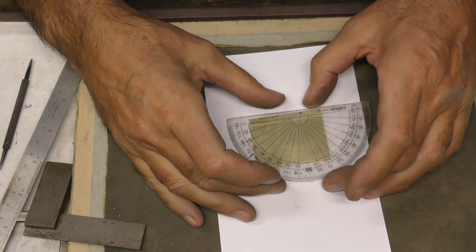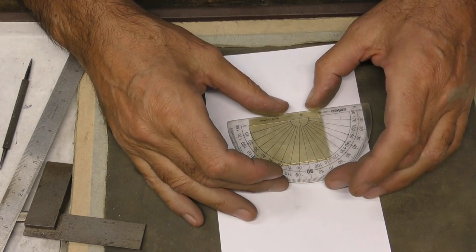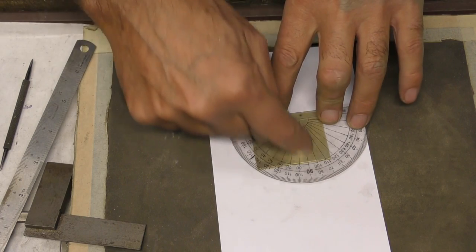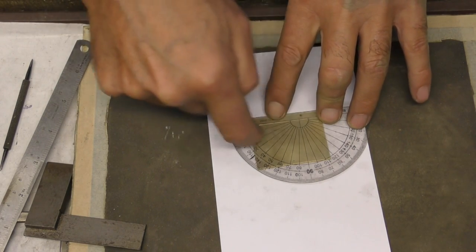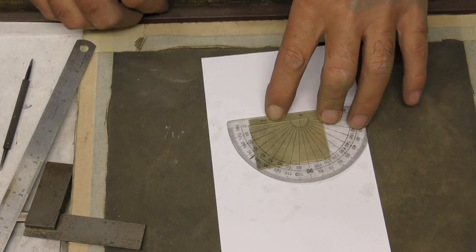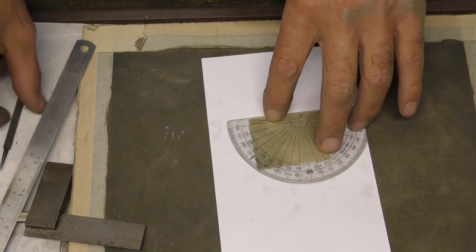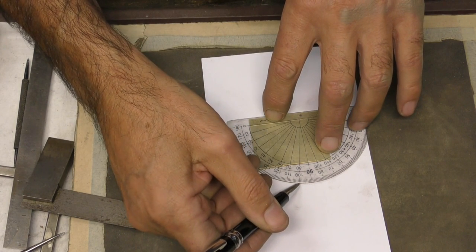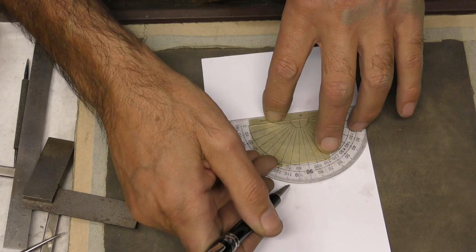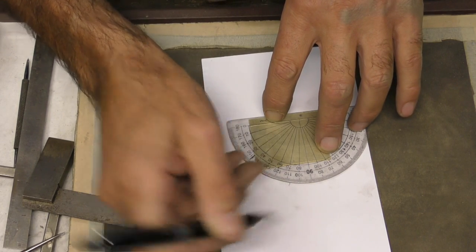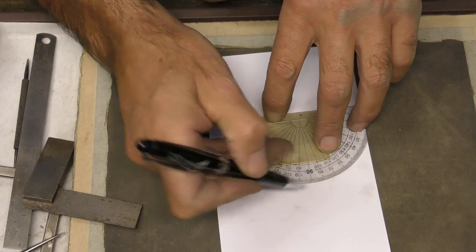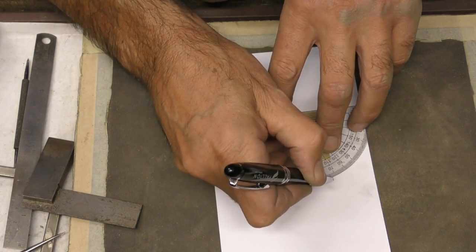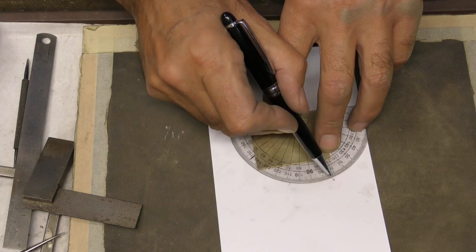With your protractor just line it up so that the 90 degree mark and the baseline there corresponds with your markings. Now mark up 10, 15, 17 degrees from the 90 degree mark and then on the other side 10, 15, 17 degrees from the other side.